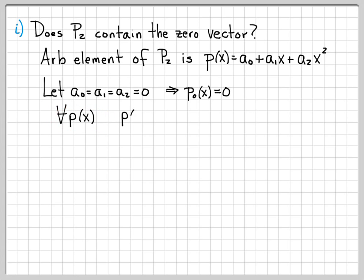So no matter what p(x) I choose, for all p(x) that I choose, p(x)+P₀(x) is just p(x)+0, which is just p(x). I get right back where I started.